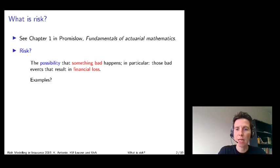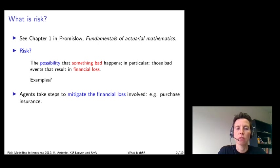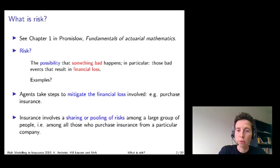Agents take steps to mitigate the financial loss involved. For instance they buy an insurance cover. Insurance then exists as a device to share or to pool the risks among a large group of people. As the motto of Lloyd's in London says, in insurance the contributions of the many will cover the misfortunes of the few.